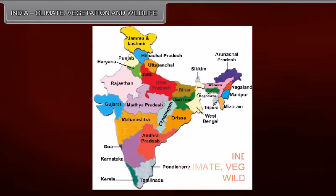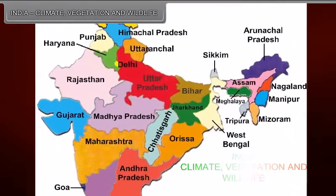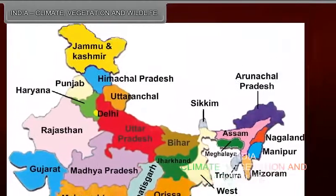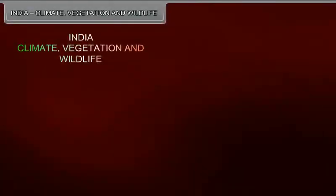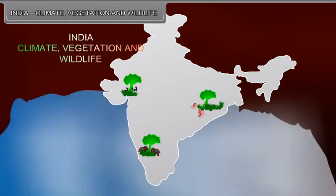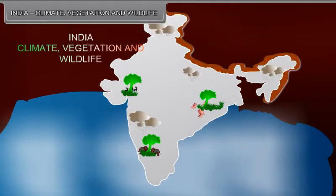India is a large-sized country. It has a variety of relief features. The vast size, varied relief features, latitudinal extent, proximity to the sea and the direction of monsoon winds are the important factors which affect the climate of India.